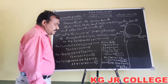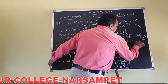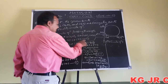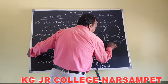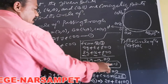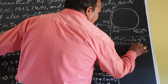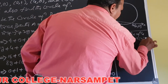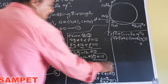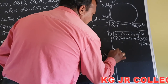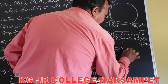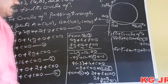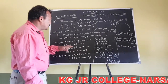Now substituting g=-3, f=-9/2, c=8 into the general circle equation, the circle equation is: x² + y² - 6x - 9y + 8 = 0. This is the circle equation passing through the three points.